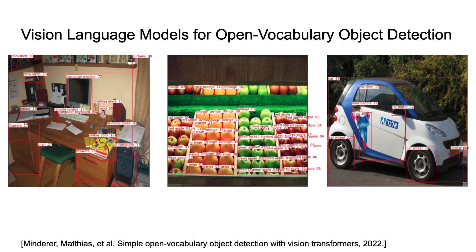Can we expand the performance of RT1 to many new objects without collecting an additional hundreds of thousands of demonstrations? One potential solution is to leverage recent advances in vision language models that are able to perform zero-shot open vocabulary image detection given a language description. Here, we show compelling real examples of one such model, OWL-VIT.